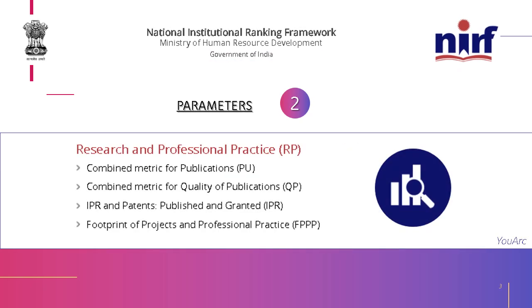The second parameter is Research and Professional Practice. This considers publications — research projects done by the college, students, or faculty members — and the quality of those publications, such as papers published in reputed research journals. These are very important in terms of gaining knowledge, testing students, and advancing quality in the field.